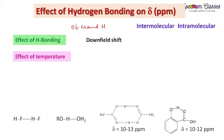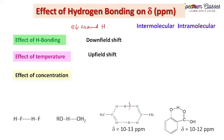On increasing the temperature, hydrogen bonding decreases — whether inter or intramolecular. If hydrogen bonding decreases, the shift in the electron density decreases. So what effect do we get? We get an upfield shift. So on increasing the temperature, we observe an upfield shift.